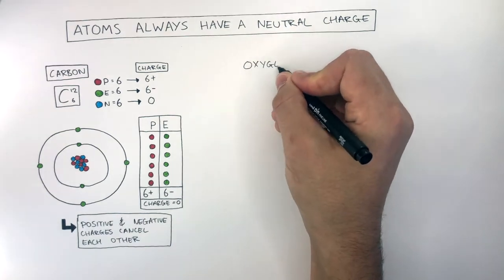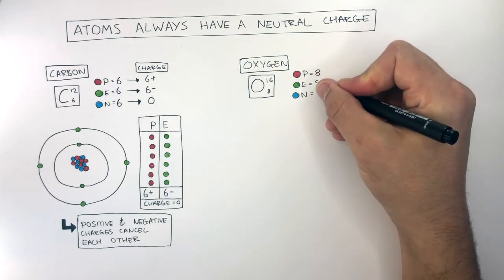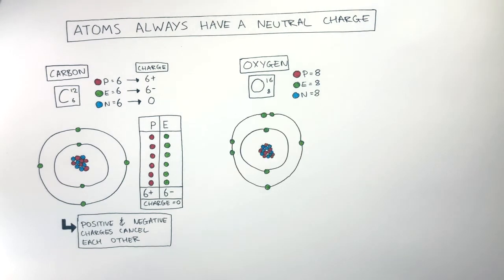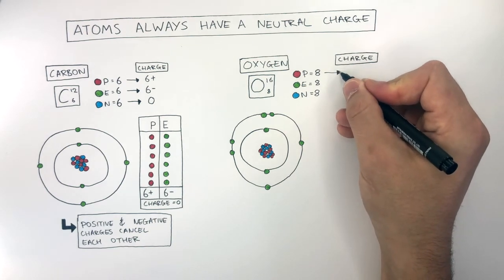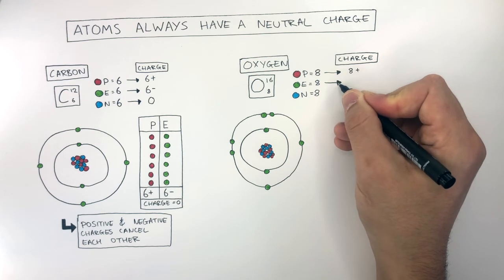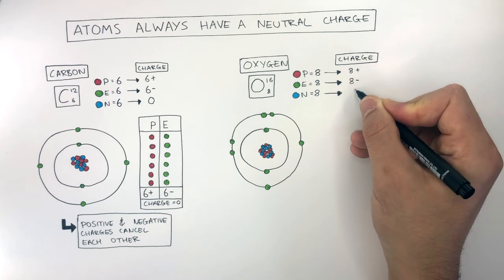Let's look at oxygen to understand this in more detail. Oxygen has a mass number of 16 and an atomic number of 8. This means there are 8 protons, 8 electrons, and 8 neutrons. Therefore, its atomic structure will look something like this. 8 protons have a charge of 8+, 8 electrons have a charge of 8-, and 8 neutrons have a charge of 0.